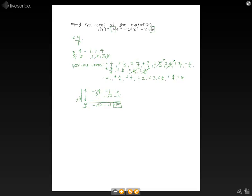Let's try a positive 6. So we'll write our same numbers like before. So you bring down the 4. 4 times 6 is 24. So -24 plus 24 is 0. 0 times 6 is 0. So -1 plus 0 is -1. And then -1 times 6 is -6, which gives us a 0. So this means that 6 is a zero for this equation.